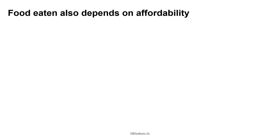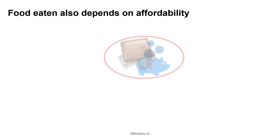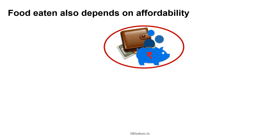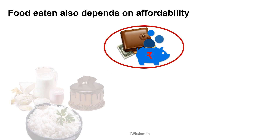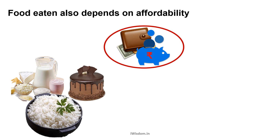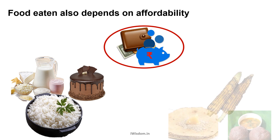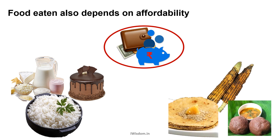The type of food eaten also depends on affordability. Some food items are expensive as they are less abundant, like basmati rice, milk, and cake — only the rich can afford such food. Food items like corn and food prepared from ragi and bajra are relatively less expensive and the poor can afford them. Families adopt different kinds of food based on what they can afford.